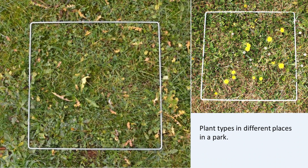A scientist might do this in different parts of the park or garden to see if there are more or fewer plants and animals in one place compared to another. The number of different species they find helps scientists understand the biodiversity of the area. If scientists find many different types of plants and animals, it means the area has high biodiversity, which is good because it shows that nature is healthy. If they find only a few types, it means the area has low biodiversity, which might indicate it is not a good habitat for many different species. Try this at home or at a park near you!